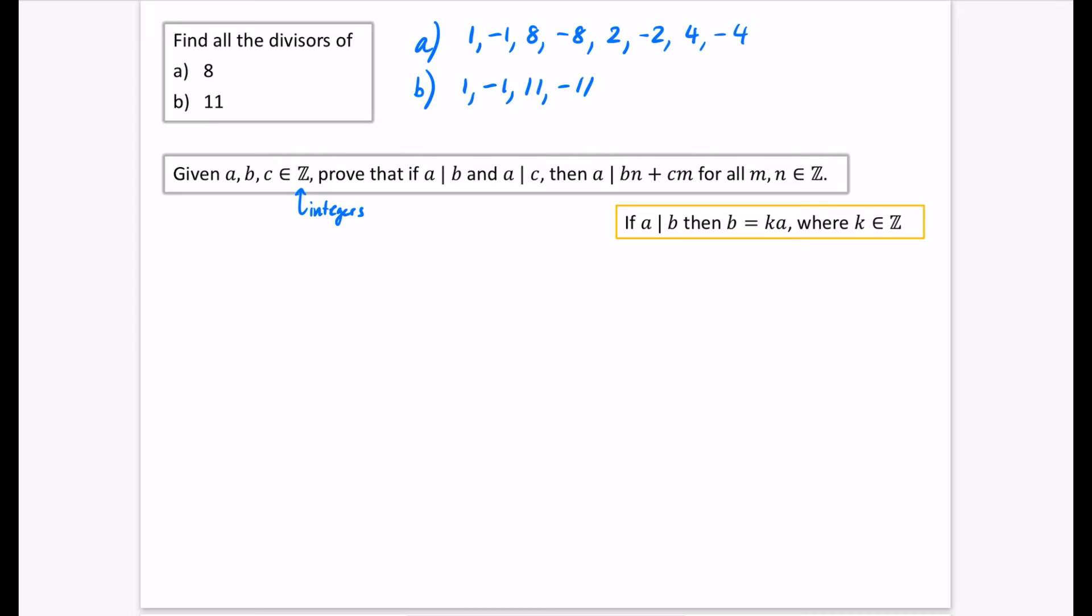But if we just kind of think about it with a number, for example, so if I was going to say, I don't know, that 3 divides 9, and also 3 divides 12, then what we're saying here is that 3 will divide, what's my b, 9 lots of n plus 12 lots of m. And that kind of makes sense that if we're saying here, if you multiply 9 by some integer, and you add it to 12 multiplied by some integer, this whole thing is still going to be divisible by 3. So it's really just trying to formalize some of these bits, where with numbers, it just kind of seems intuitive.